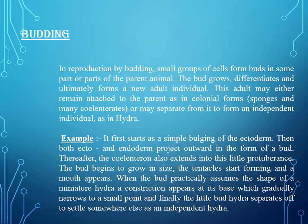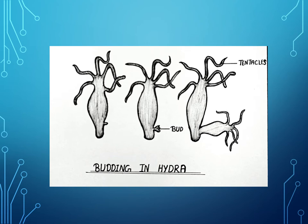In Hydra, budding may separate from the parent to form an independent individual. It first starts as a simple bulging of the ectoderm, then both ecto- and endoderm project outward in the form of a bud. The coelenteron also extends into this little protuberance. The bud grows in size, tentacles start forming, and the mouth appears. When the bud particularly assumes the shape of a miniature hydra, a constriction appears at its base which gradually narrows to a small point and finally the little bud hydra separates off to settle somewhere else as an independent hydra.